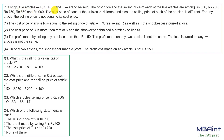In a shop, five articles P, Q, R, S, T are to be sold. The cost price and the selling price of each of the five articles are among 650, 700, 750, 850, and 900. The cost price of each article is different and the selling price of each article is different. For any article, the selling price is not equal to the cost price, so each transaction results in either a profit or a loss.